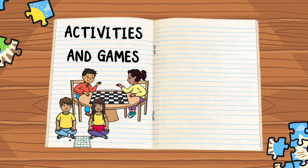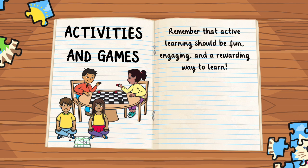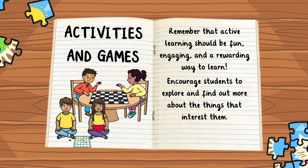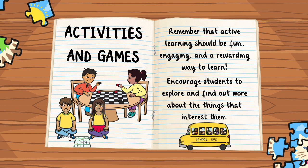Give them practical activities and educational games. Remember that active learning should be fun, engaging, and a rewarding way to learn. Encourage students to explore and find out more about the things that interest them. Educational games will help them build problem-solving and critical thinking skills. Practical activities like taking trips, visiting libraries and museums, or having conversations about what they are learning at school will increase their motivation to keep learning new things.